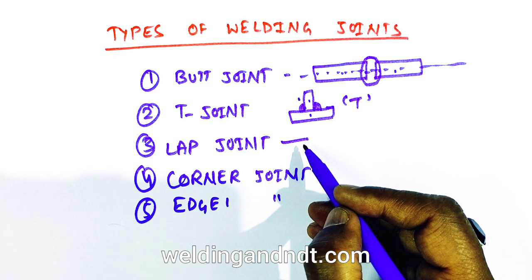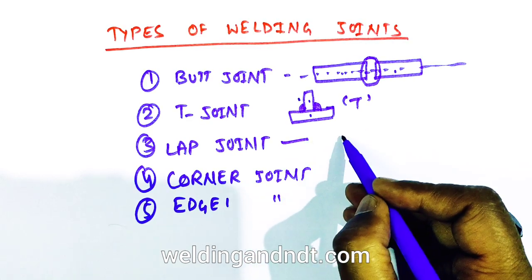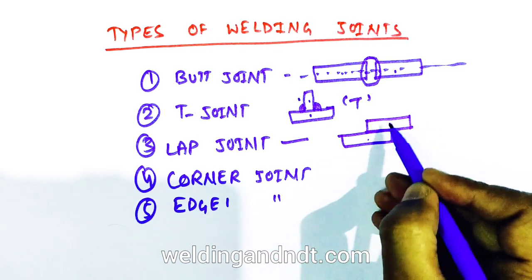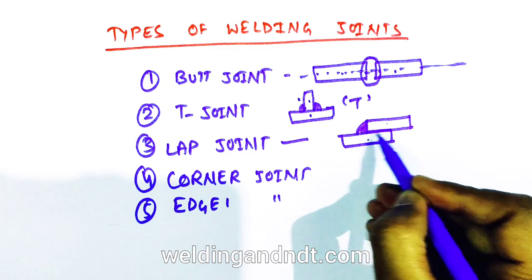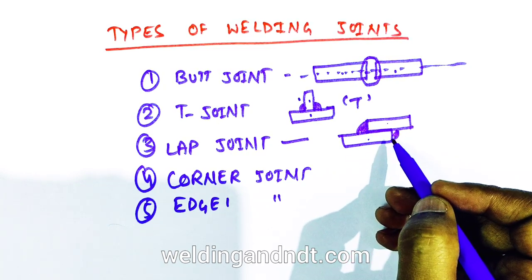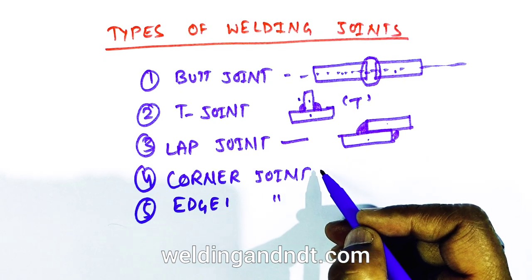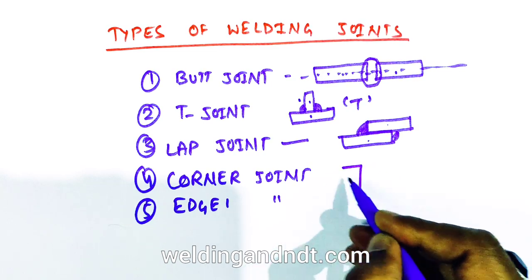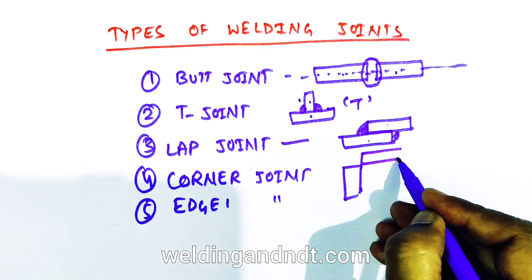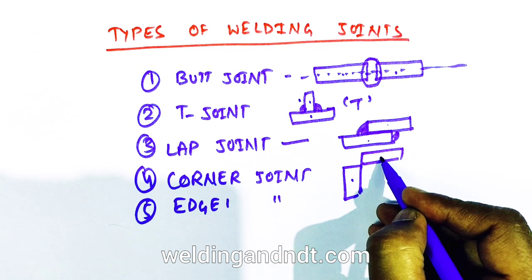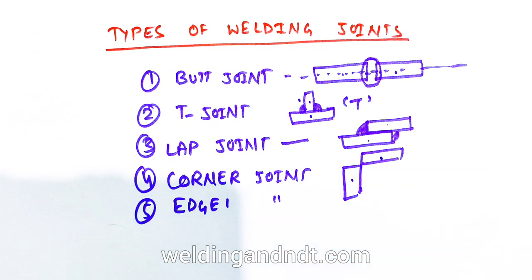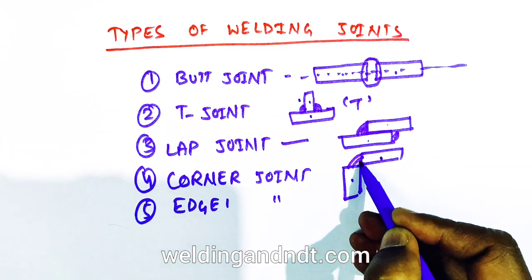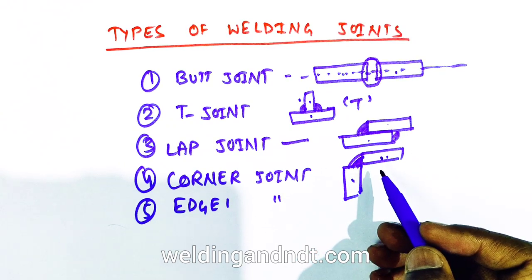In a lap joint, two overlapping parts are joined together. In a corner joint, the two parts are placed at right angles to each other at the ends, and joining takes place at the corner — forming a corner shape.